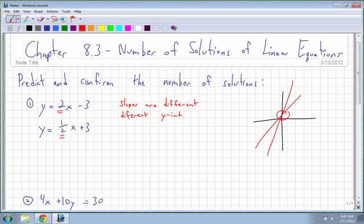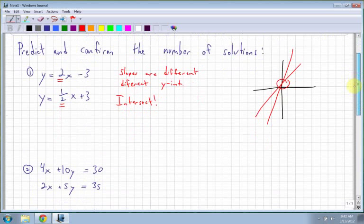Different y-intercepts. So the slopes are different, the y-intercepts are different, therefore I know that they intersect in one location.